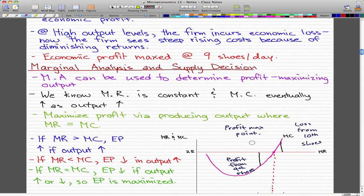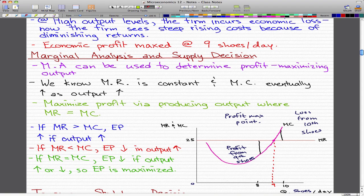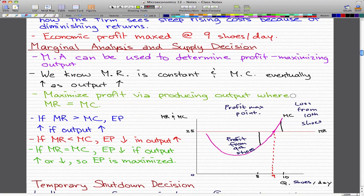Profit is maximized by producing the output at which marginal revenue equals marginal cost, or MR equals MC. This is what is shown here in this graph. Let's take a look at this graph.